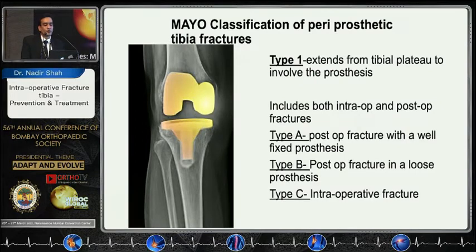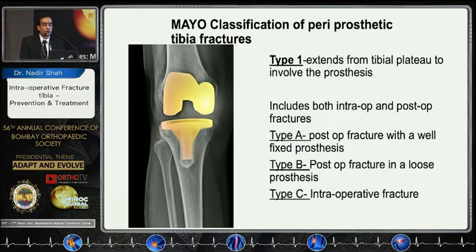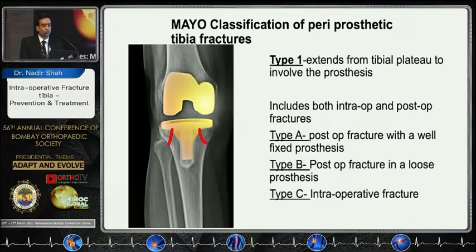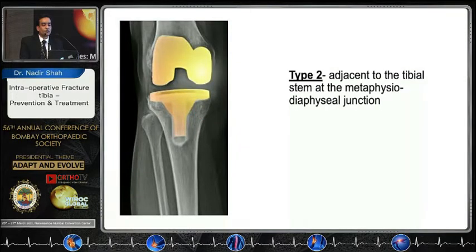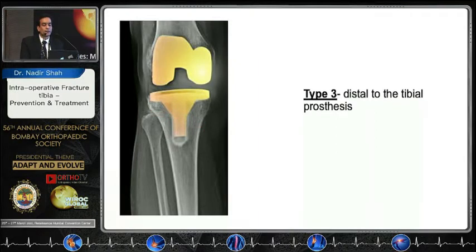Here is a new classification for periprosthetic fractures of the tibia. Type 1 extends from the plateau to the prosthesis and includes both intra- and postoperative fractures. Type 1a is a postoperative fracture with a well-fixed prosthesis; Type 1b is postoperative with a loose prosthesis; Type 1c is intraoperative only. Type 2 is adjacent to the tibial stem at the metaphyseal-diaphyseal junction, and Type 3 is distant to the tibial prosthesis.